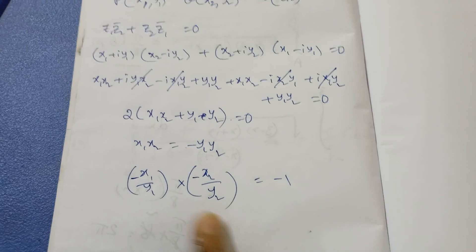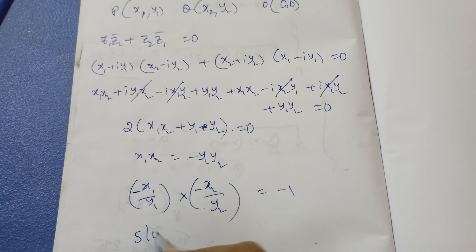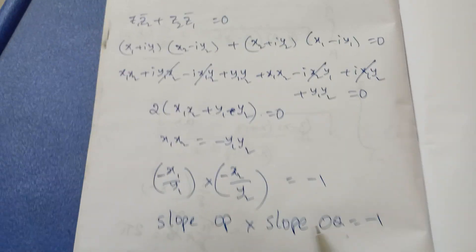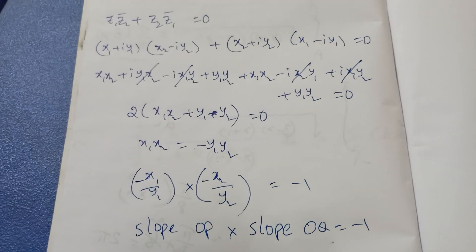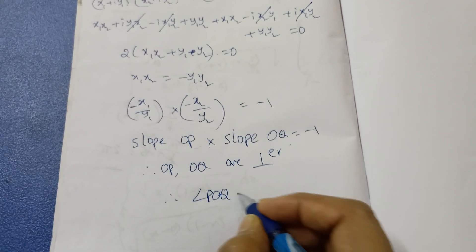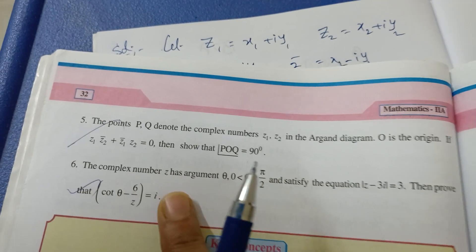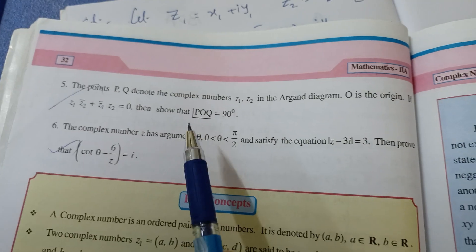Rearranging: (y1/x1)·(y2/x2) = −1, which means slope of OP × slope of OQ = −1. Since m1·m2 = −1, OP and OQ are perpendicular. Therefore angle POQ = 90°. Proved! The given condition z1·z2̄ + z1̄·z2 = 0 implies angle POQ = 90°.